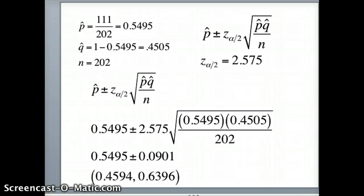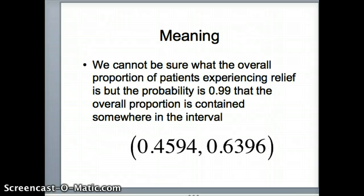Now what does that mean? We cannot be sure what the overall proportion of patients experiencing relief is, but the probability is 0.99, 99%, that the overall proportion is contained somewhere within that interval. We're 99% certain that this interval will capture the population mean. And that will conclude this lesson.